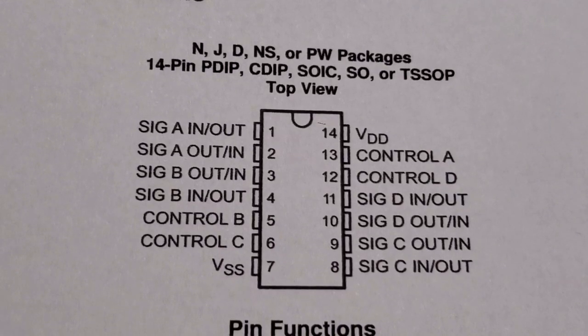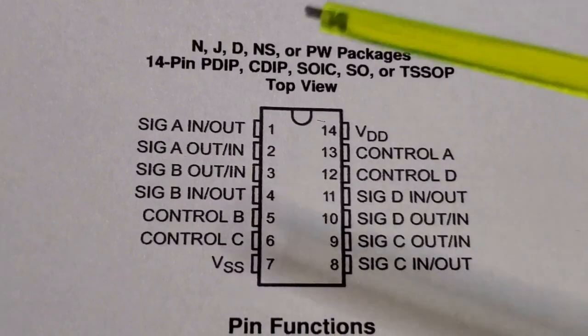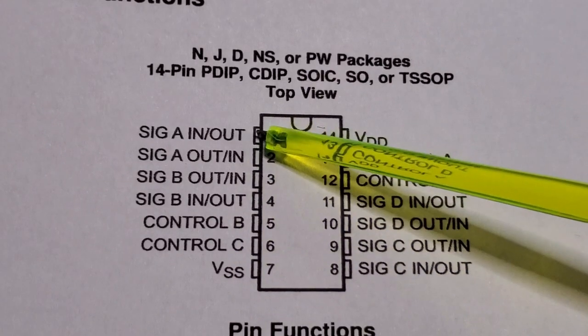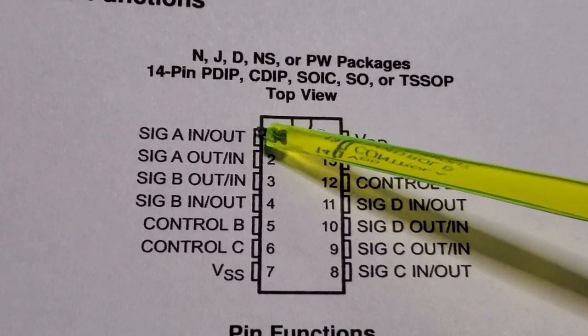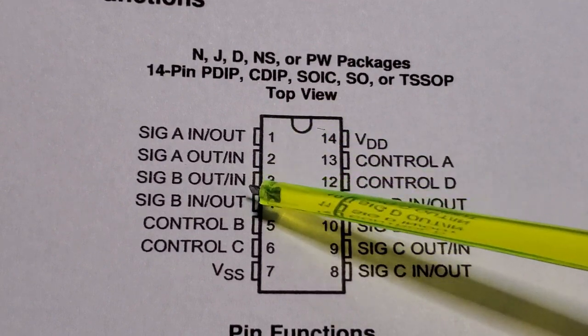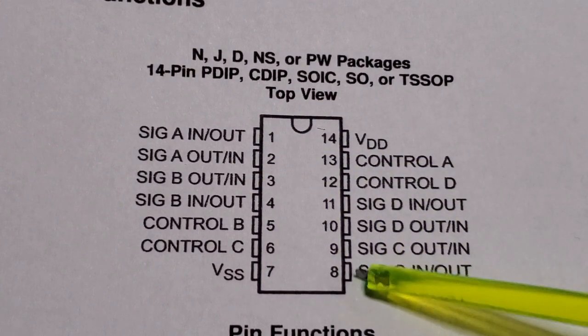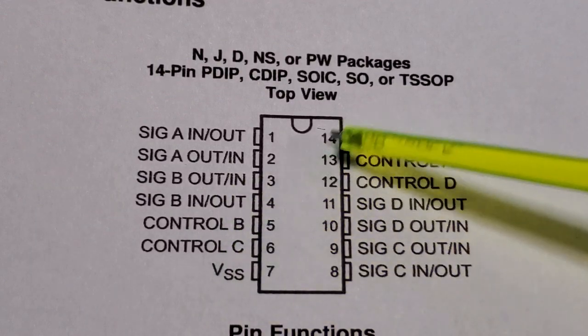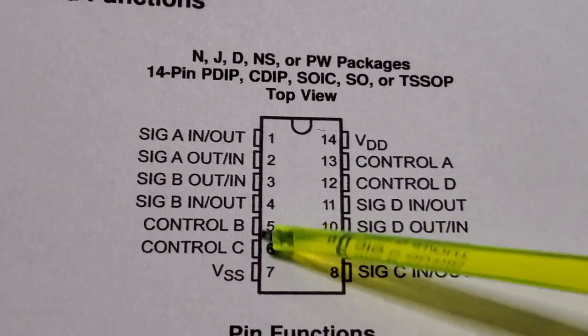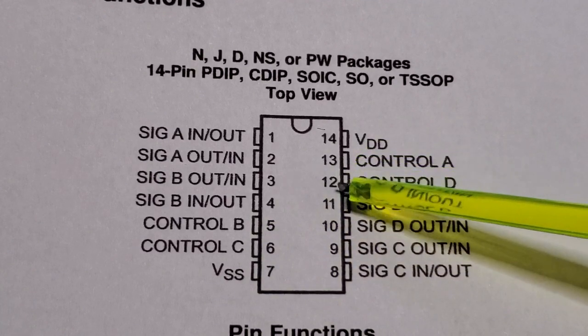So here's the pin-out diagram blown up a little bit and you can see the four switches here. So we've got SIG A out and in, SIG B out and in and then SIG C and D out and in. And they're controlled by these control pins here A, B, C and D.